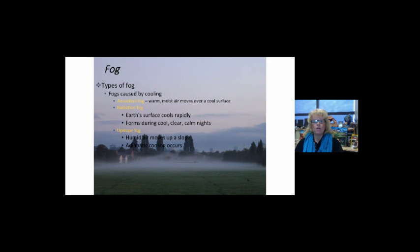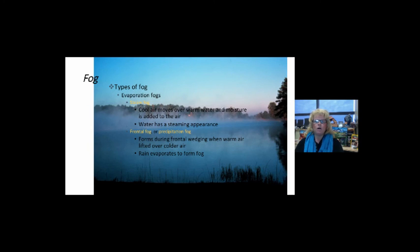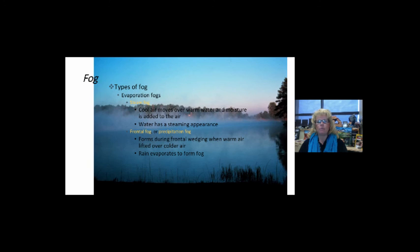There are many different types of fog. Advection fog is warm, moist air that moves over cool ground. Radiation fog is where the earth's surface cools rapidly during calm, nice, clear, cool nights. Upslope fog is where humid air moves up a slope because of adiabatic cooling rates. Steam fog is where cool air moves over warm water. You've all seen this over a lake, river, or stream—the water appears to be steaming. A frontal or precipitation fog forms during a front system where warm air lifts over colder air and rain evaporates to form a fog-type structure.